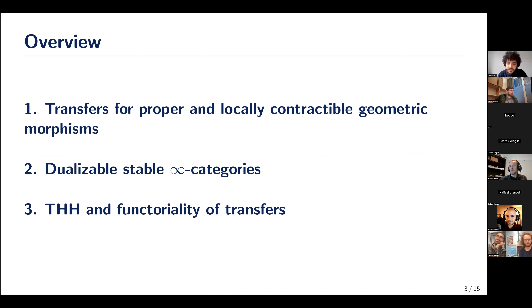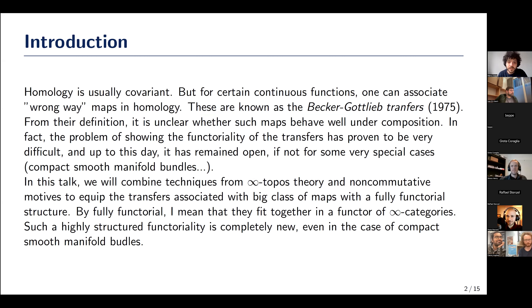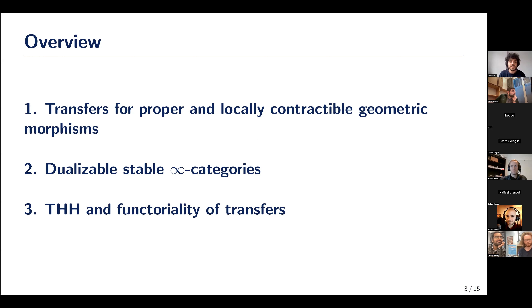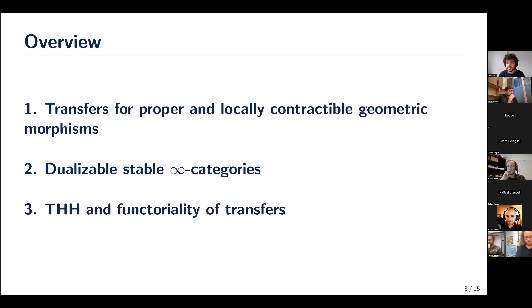Having a functor between infinity categories is a big deal in some sense because it's a huge amount of data. This kind of functoriality for the Becker-Gottlieb transfers is completely new — even in the cases where functoriality was known, it was known only at the level of the homotopy category. I would like to say something about how this construction works. I'll start with the more topos-theoretic part: introducing the class of maps for which transfers can be associated, then discuss dualizable stable infinity categories, and finally define THH and use it to construct the functor.